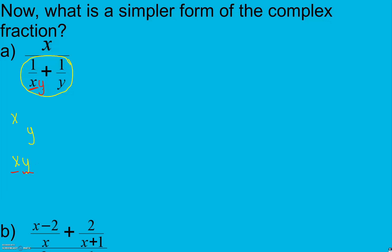In my first fraction I have the x but I'm missing the y, so I need to multiply by y to get my common denominator. Whatever I do to the denominator I have to do to the numerator to keep it equivalent. In my second fraction I have the y but I'm missing the x, so I need to multiply by x — top and bottom — to keep it equivalent. Now that I've got my common denominator and equivalent fractions, I can combine them into one fraction: y over xy plus x over xy.